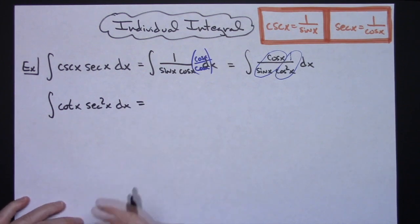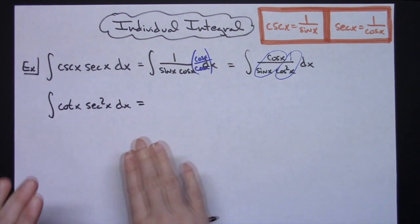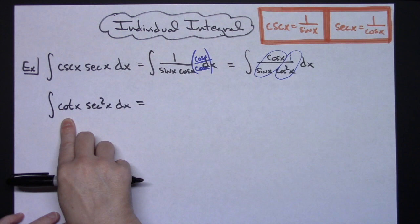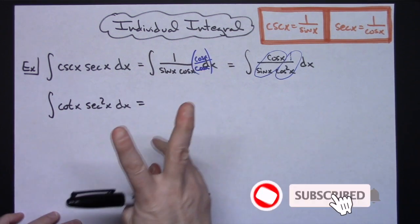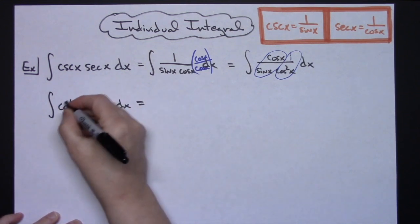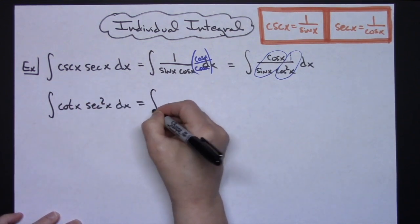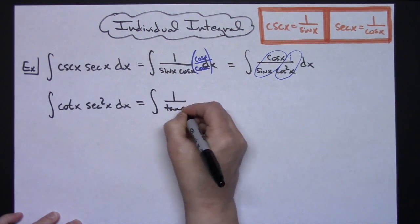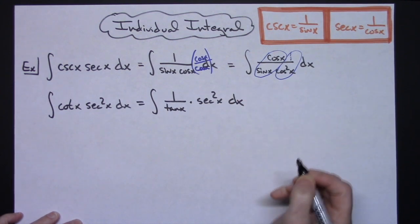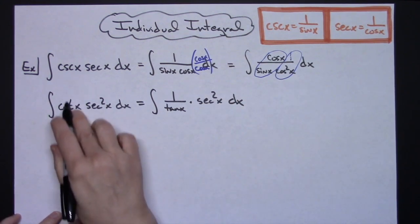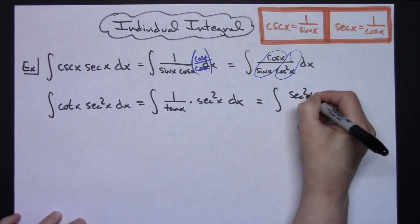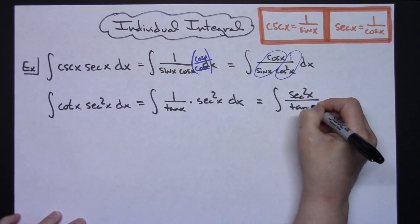I still don't have anything I can pick a u for yet. But another substitution: cotangent equals 1 over tangent, and tangent and secant squared have that connection. So I'm going to do one more substitution for cotangent, making it 1 over tangent x times secant squared x dx. Putting that together gives a nice integral of secant squared x over tangent x dx.